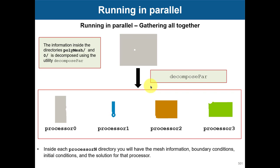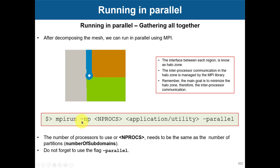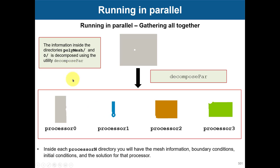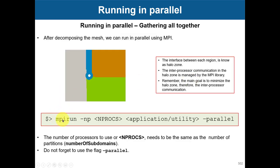After you decompose, you have everything ready to run. To run, use `mpirun -np` followed by the number of processors or subdomains defined in the `decomposeParDict`, then the name of the application or utility, and do not forget the flag `-parallel`. This flag tells OpenFOAM that you are running in parallel. If you don't put it, it will run but it will launch four separate serial jobs — slowing everything down. Always put the `-parallel` keyword. All the solvers in OpenFOAM run in parallel, so this is all you need.